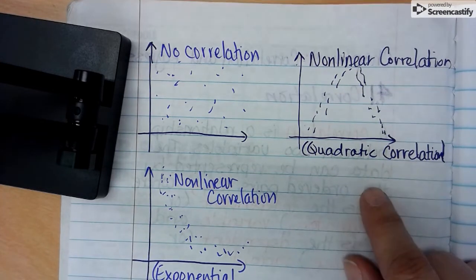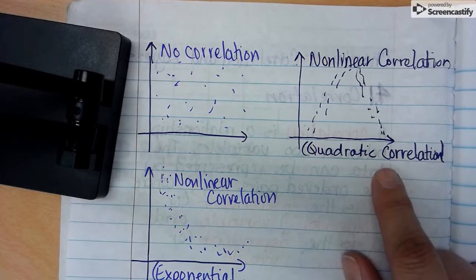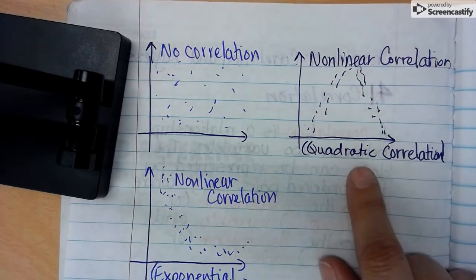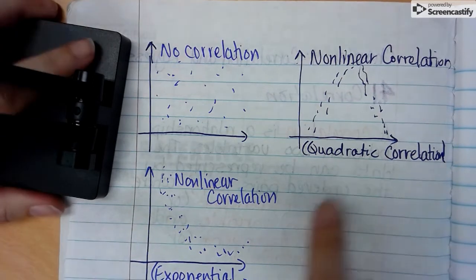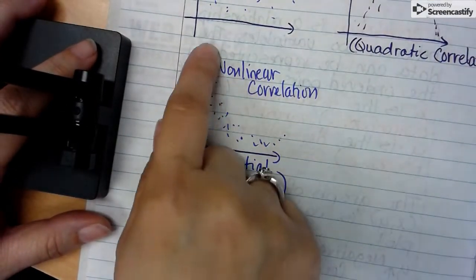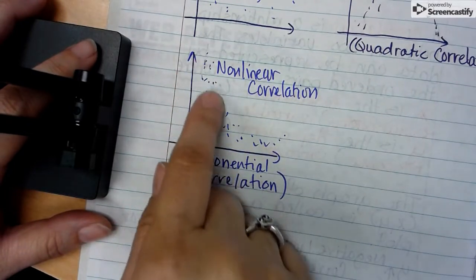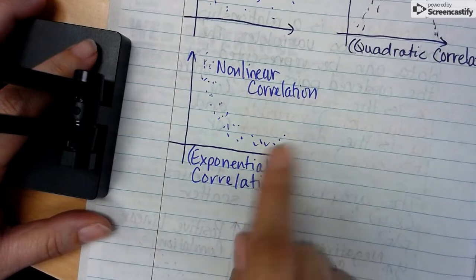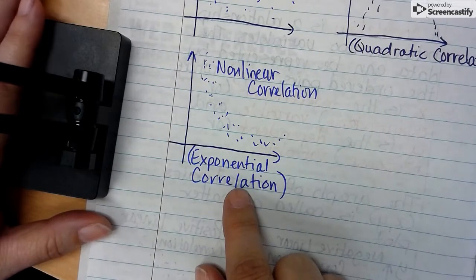If it appears to have a shape similar to a quadratic - a frowny face or happy face - we call that a non-linear or quadratic correlation. If it appears to be almost like a check mark, dropping and then leveling off, this is called exponential correlation, also non-linear.